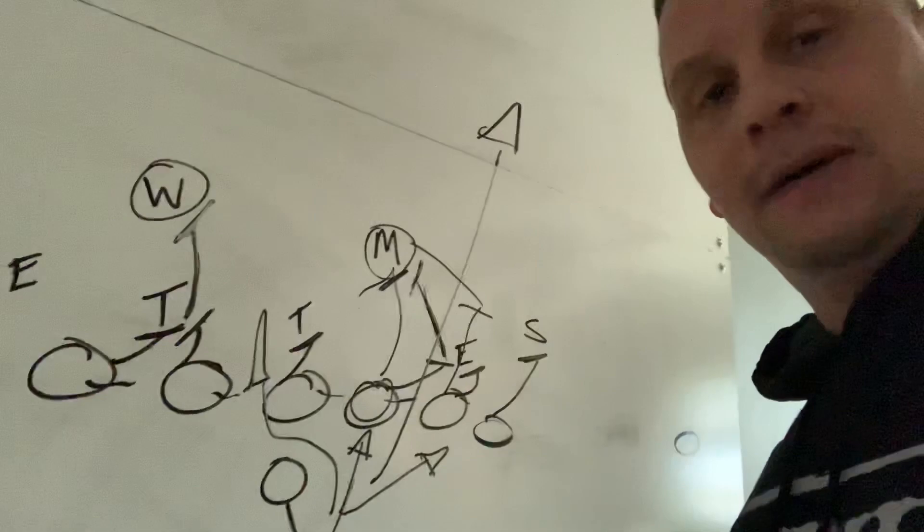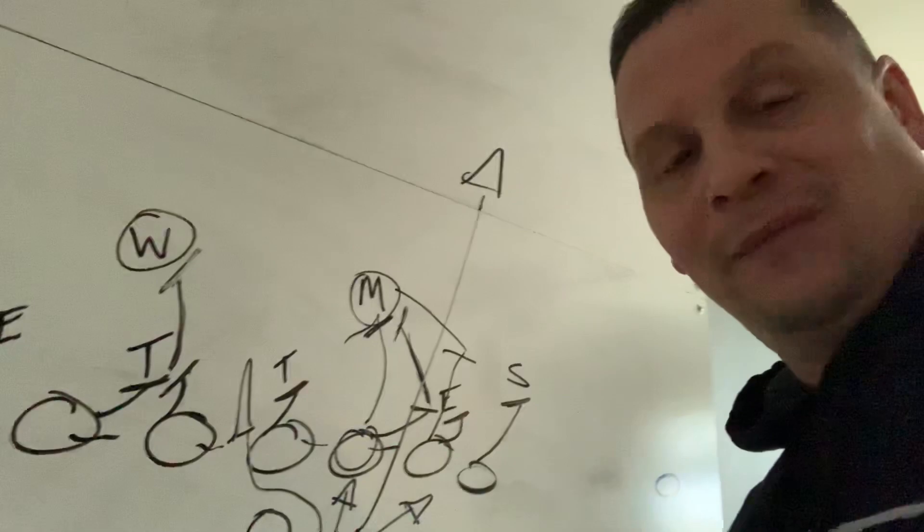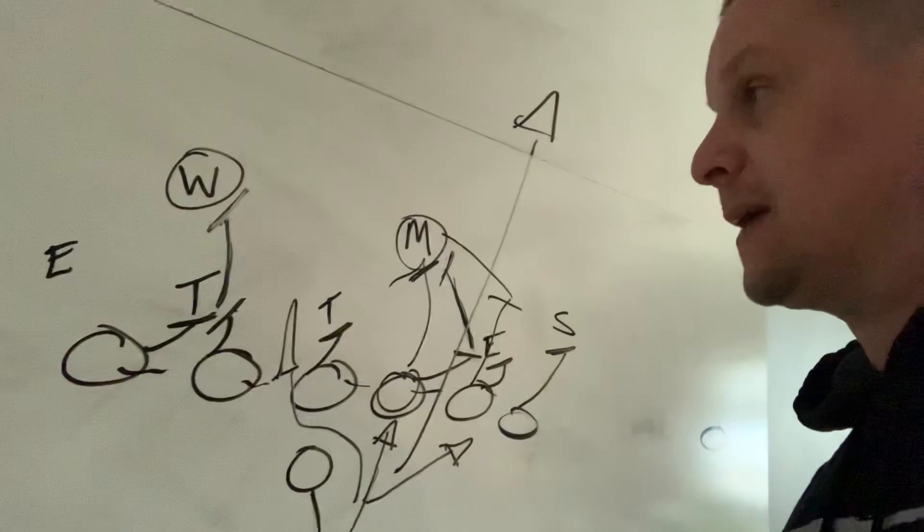This is what got Clinton Portis the $50 million contract from Dan Snyder and what made Joe Gibbs fall in love with him back in 2004, maybe.